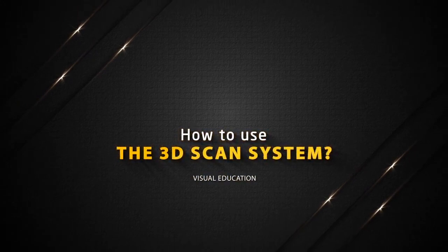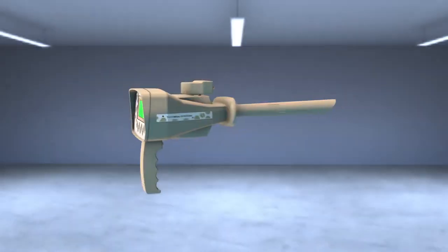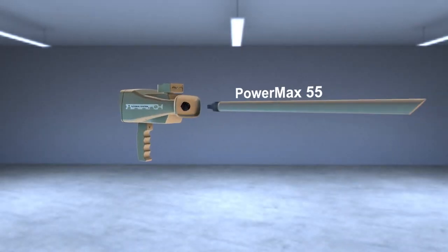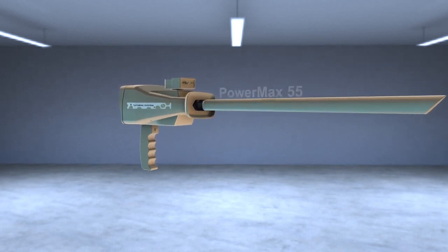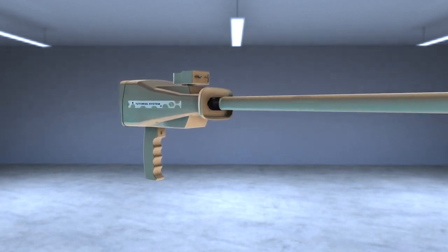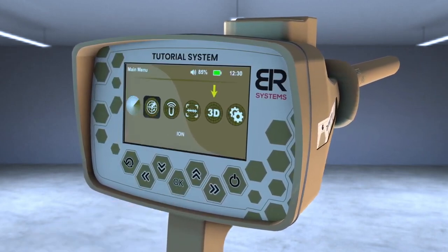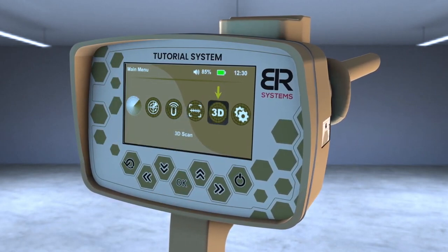How to use the 3D Scan System? Make sure that the PowerMax 55 sensor of the 3D Search System is connected and tighten the clamp well. Turn on the device. A screen will appear containing the 3D Scan icon. Choose it.